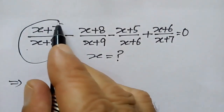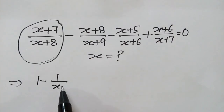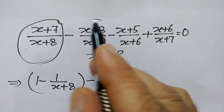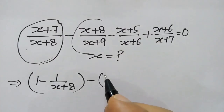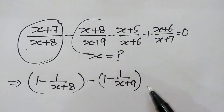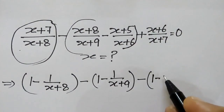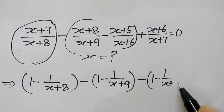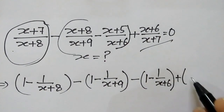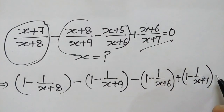This fraction can be written as 1 minus 1 over (x+8). Minus this fraction as 1 minus 1 over (x+9). Minus this fraction as 1 minus 1 over (x+6), plus this one as 1 minus 1 over (x+7), is equal to 0.